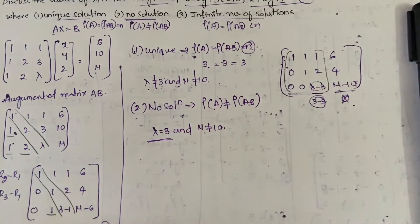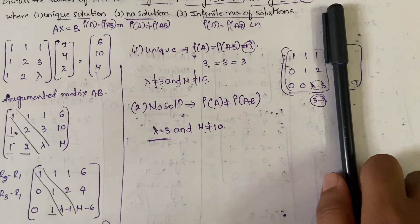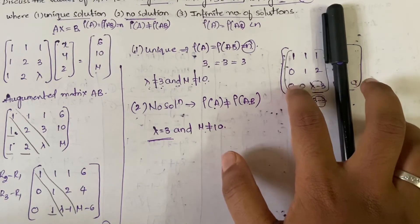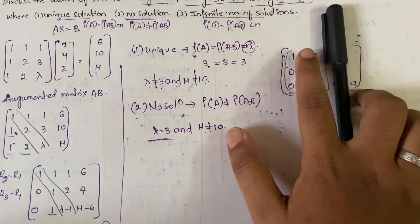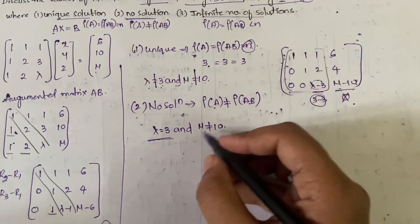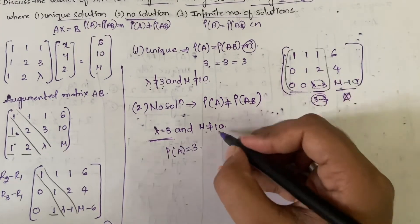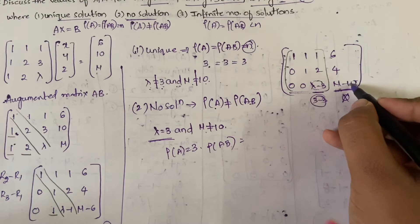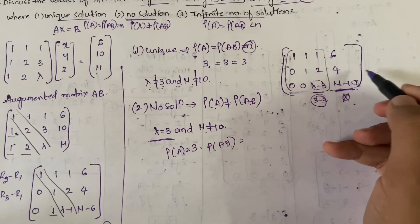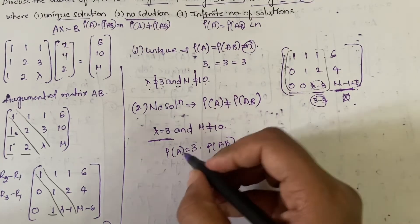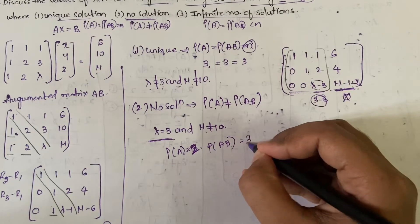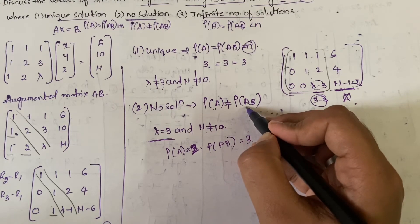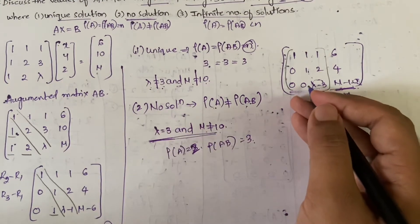With λ = 3 and μ ≠ 10: matrix A has only 2 non-zero rows, so rank(A) = 2. But in [A|b], the third row is [0 0 0 | μ−10] which is non-zero since μ ≠ 10, giving rank([A|b]) = 3. Since 2 ≠ 3, the condition rank(A) ≠ rank([A|b]) is satisfied — this is the condition for no solution.